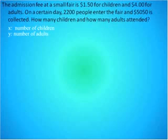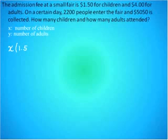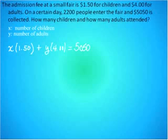We're going to get two equations to work with. They tell us how the tickets are related in two ways. The admission fee was $1.50 for children and $4 for adults, and they collected $5,050. So 1.50 times the number of children tickets plus $4 times the number of adult tickets equals $5,050. They also tell us 2,200 people entered, so the number of children tickets plus adult tickets equals 2,200.